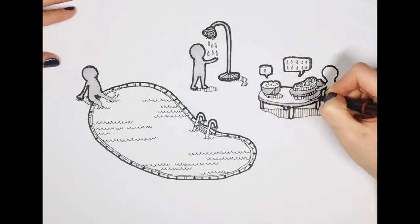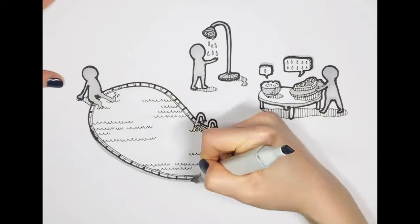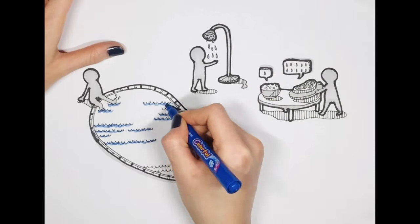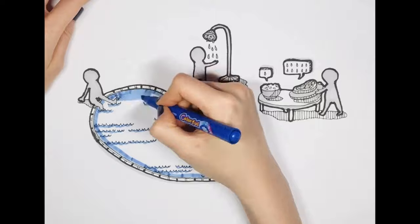For example, 1,300 liters of water is used to produce one kilogram of wheat, but for the same amount of beef, the required water is nearly 15,500 liters, almost 10 times.